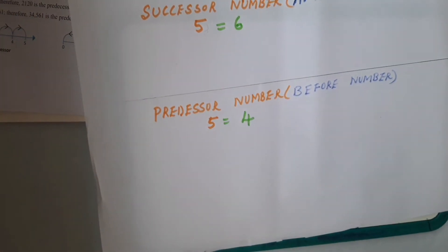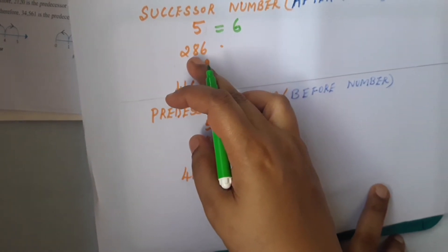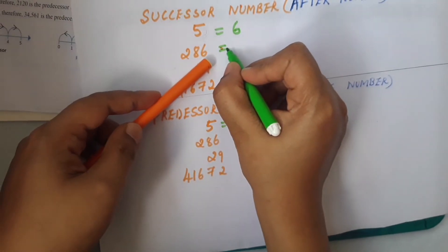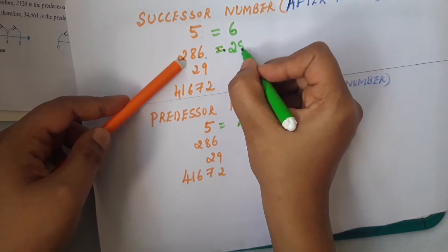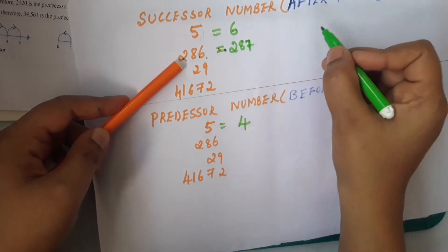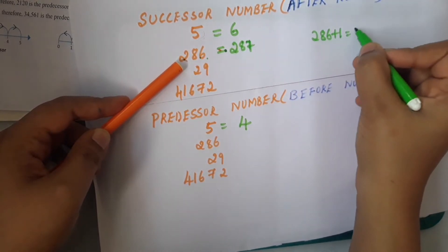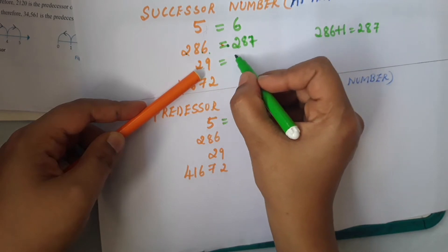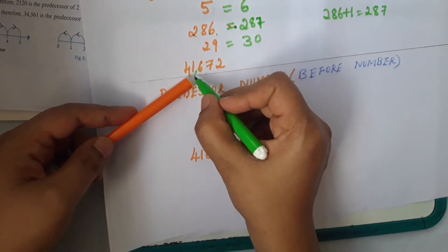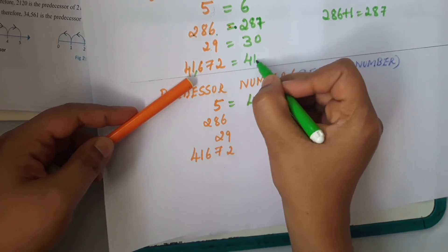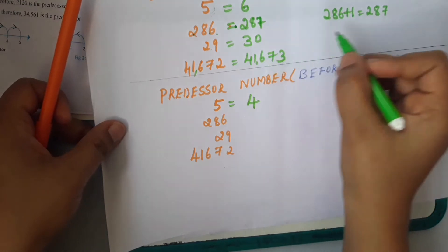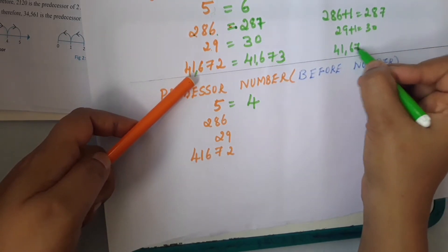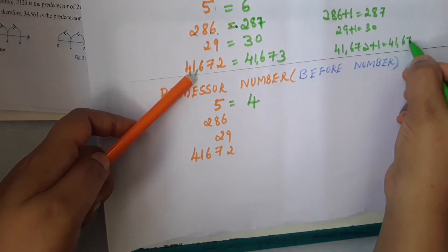Let's take some examples for successor. Successor of 286: after 286, the next number is 287. So 286 plus 1 equals 287. Successor of 29: after 29 is 30, so 29 plus 1 equals 30. Successor of 41,672: 41,672 plus 1 equals 41,673.